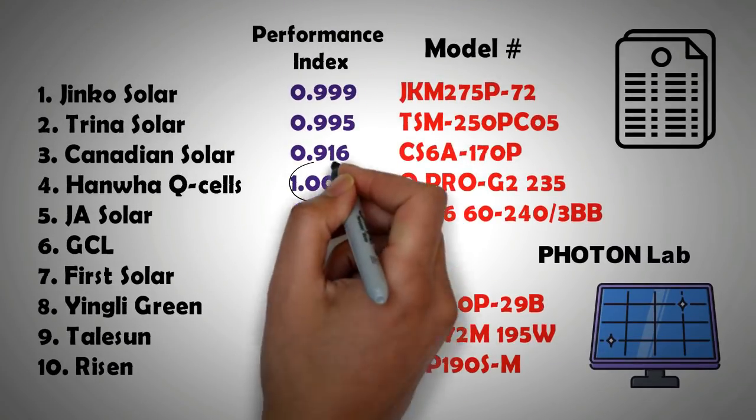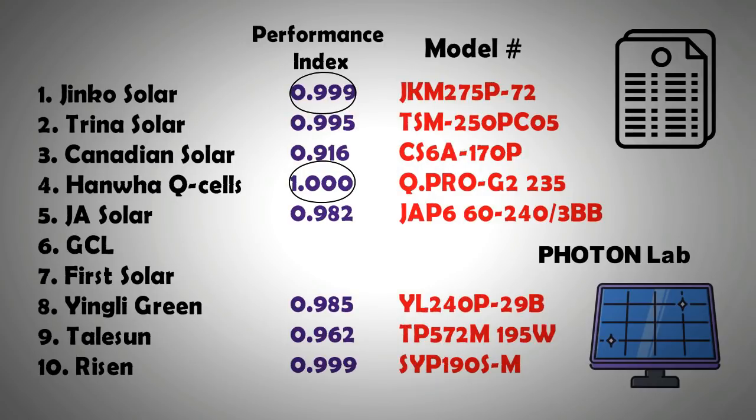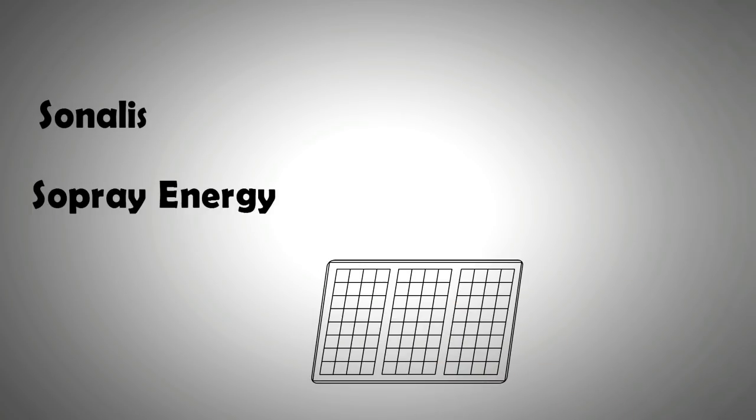So among the top manufacturers, Hanwha Qcells, Jinko Solar and Risen performed extremely well. There are some relatively small manufacturers that are also worth a mention. Their modules perform better than what their specification sheet suggested. They are Sonalis and Sopray Energy.